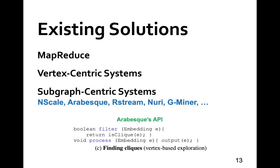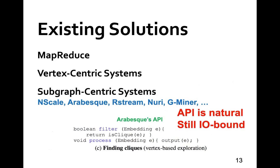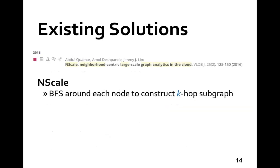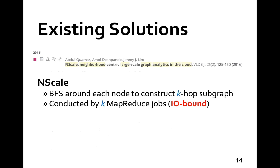Recently, a number of systems were proposed for graph mining based on subgraph-centric programming, which is more intuitive. However, they only address the programming-friendliness issue but not the low-efficiency issue, as the execution engines are still I/O bound. N-Scale is the first work in this direction, which constructs candidate subgraphs around each vertex using key iterations of breadth-first search. However, this is conducted by key MapReduce jobs, which makes the process network I/O bound, and each job needs to load and dump huge intermediate subgraphs via the Hadoop file system.